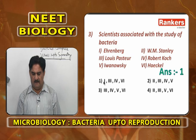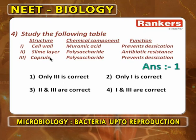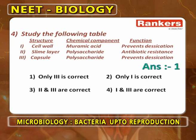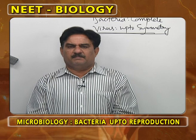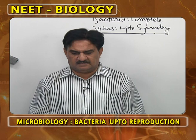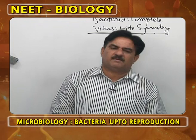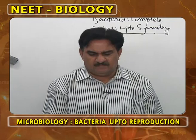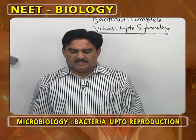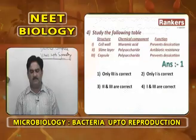Study the following table and identify the correct one. Cell wall muramic acid prevents desiccation is wrong — preventing desiccation is done by the capsule, not the cell wall. Slime layer is made up of polysaccharides but does not give antibiotic resistance; it helps bacterial cells attach to hard objects. Capsule, made of polysaccharides, prevents desiccation — capsule contains maximum water and prevents drying of the bacterial cell. So only option 3 is correct.